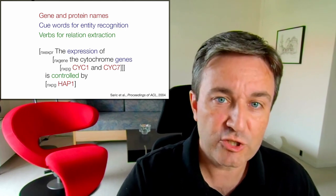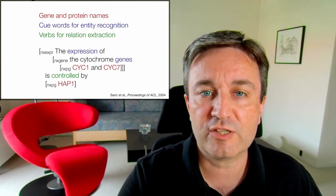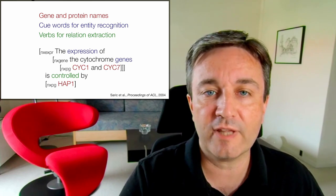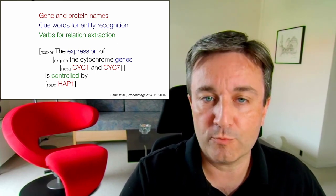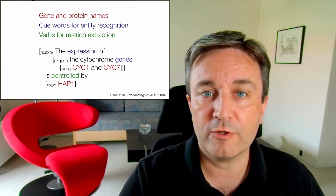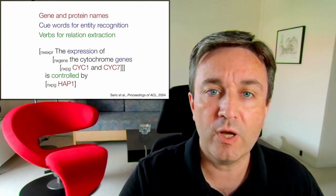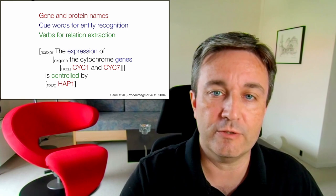Then the expression of the cytochrome genes SIG1 and SIG7. And finally, HAP1 is connected to that via a verb. That way, the system can automatically extract that HAP1 controls the expression of SIG1 and HAP1 controls the expression of SIG7.